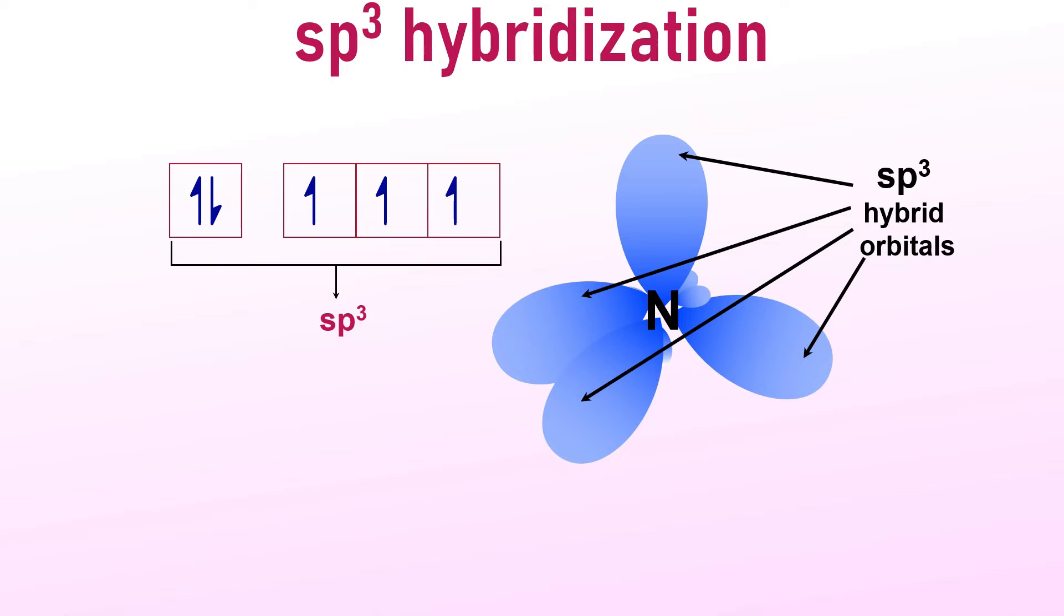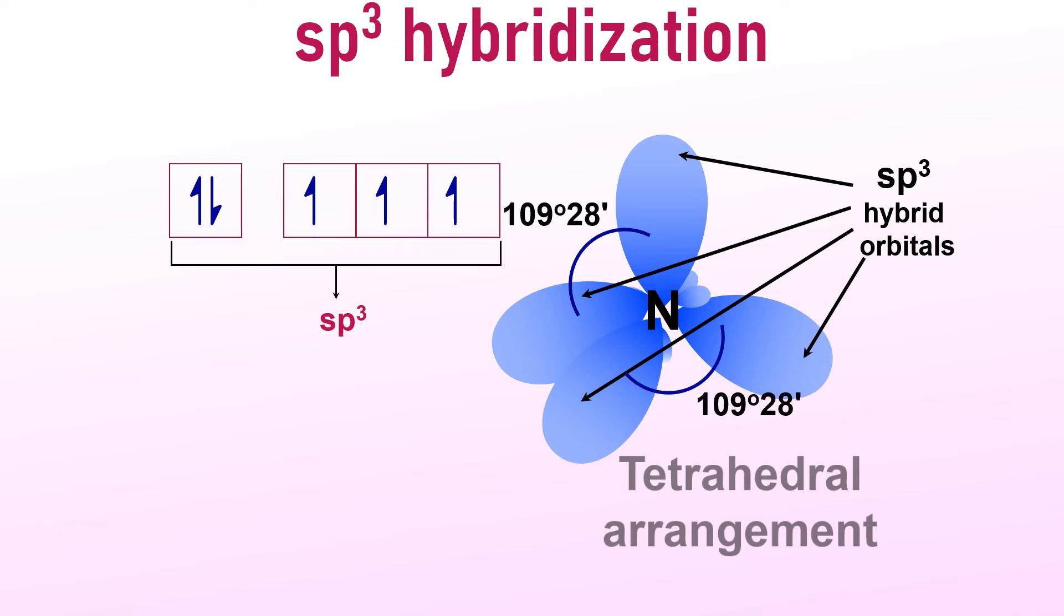These hybrid orbitals are arranged tetrahedrally in space around the nucleus of the nitrogen atom, making angles of 109 degrees 28 minutes with each other. This tetrahedral arrangement is the most stable configuration for four orbitals in space.